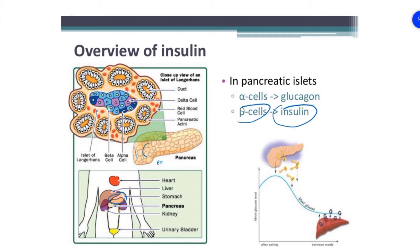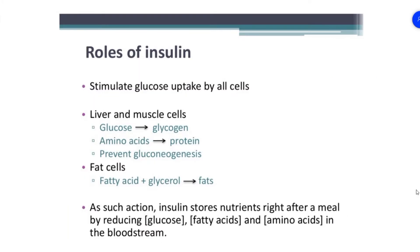The beta cells of the pancreas are responsible for the production of insulin. Insulin will be secreted by the pancreas only in response to a rise in blood sugar. So after you eat, there's going to be a rise in blood sugar, and the body will sense that and trigger the pancreas to increase the production of insulin.